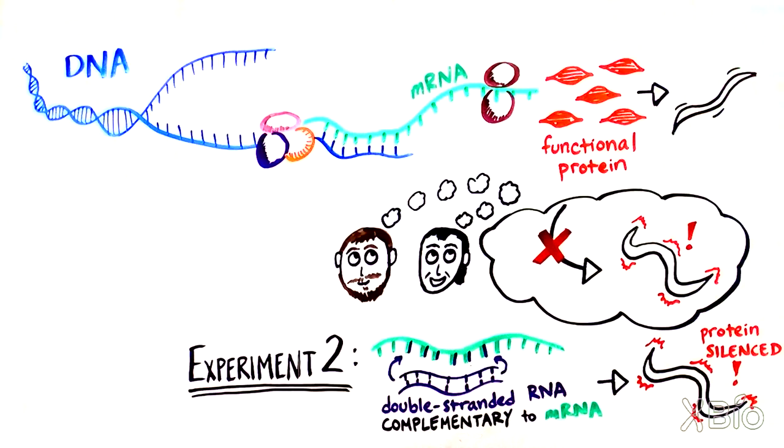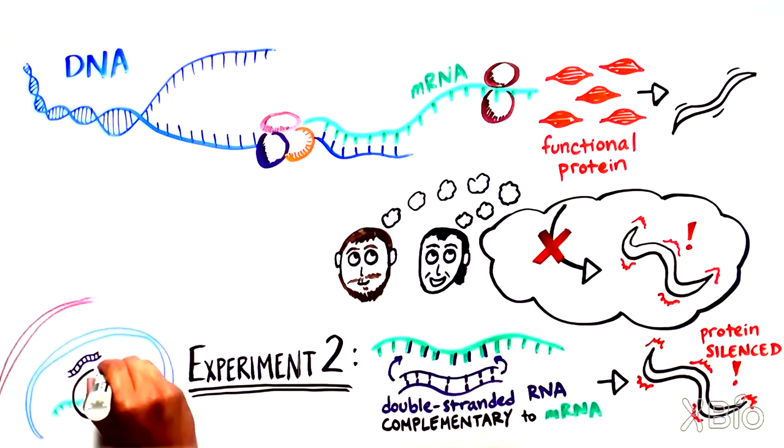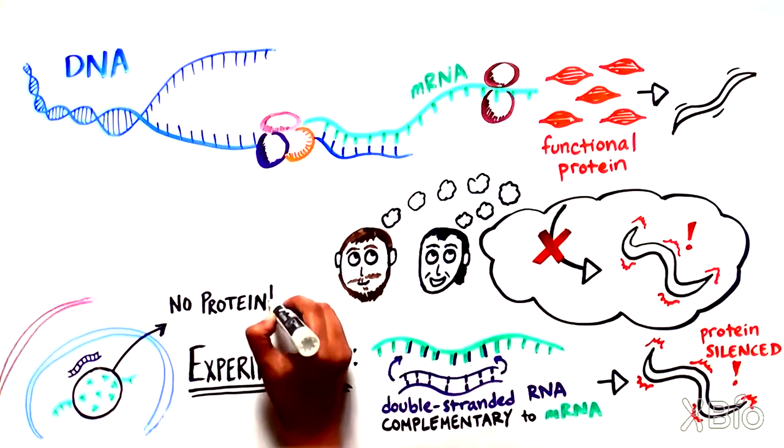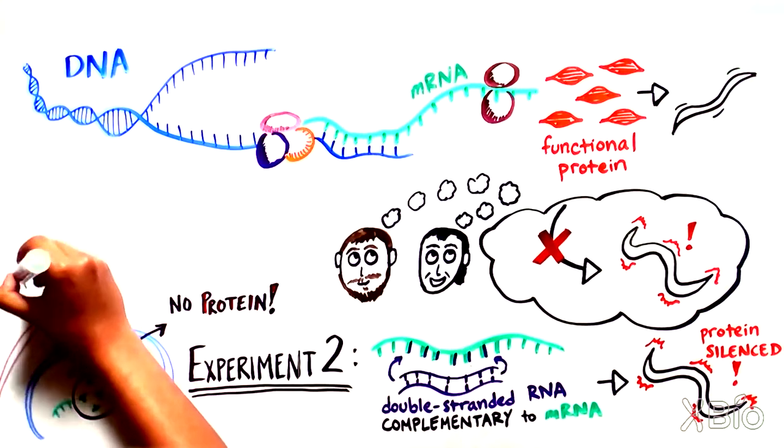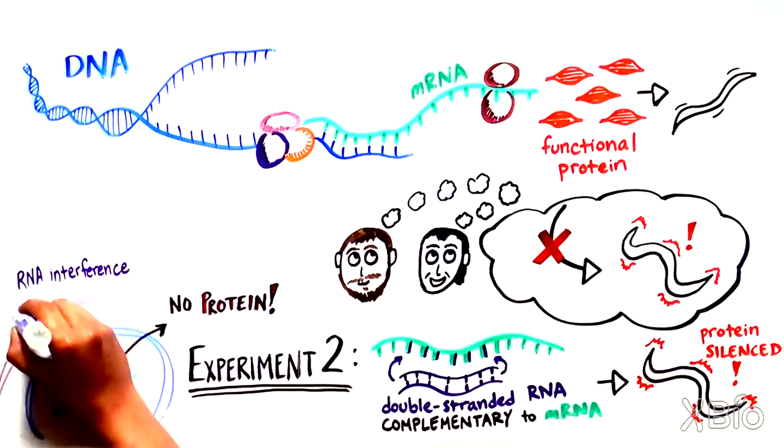This unexpected observation set off a chain of experiments which ultimately revealed that double-stranded RNA is a signal for cells to initiate a series of molecular events that leads to the destruction of a matched RNA sequence. Doing so prevents production of the protein encoded by the RNA. This entire process is known as RNA interference, or RNAi.